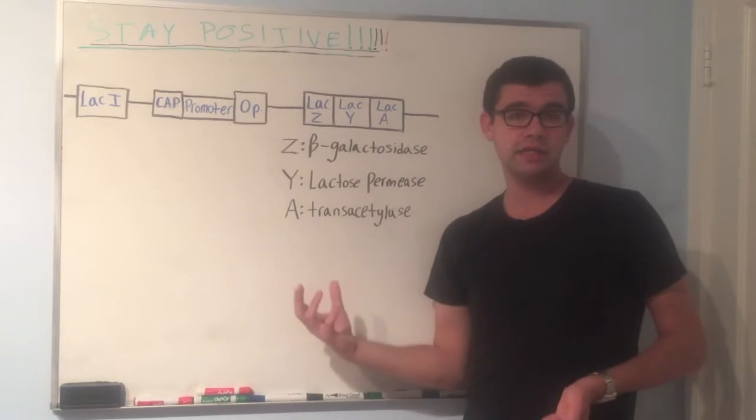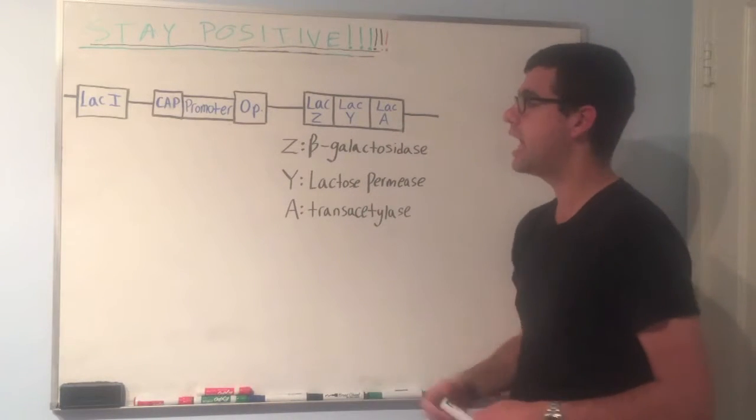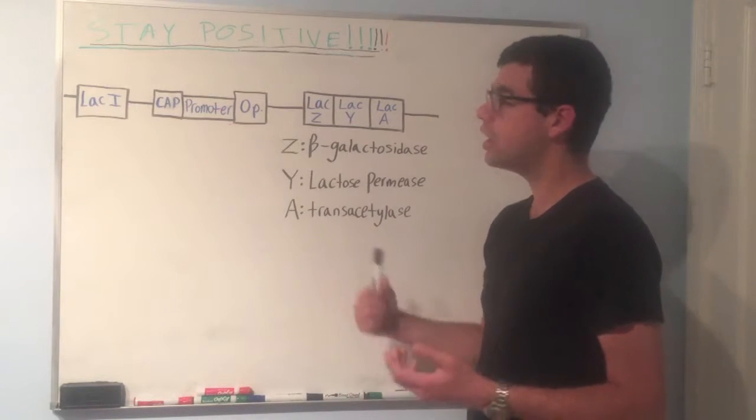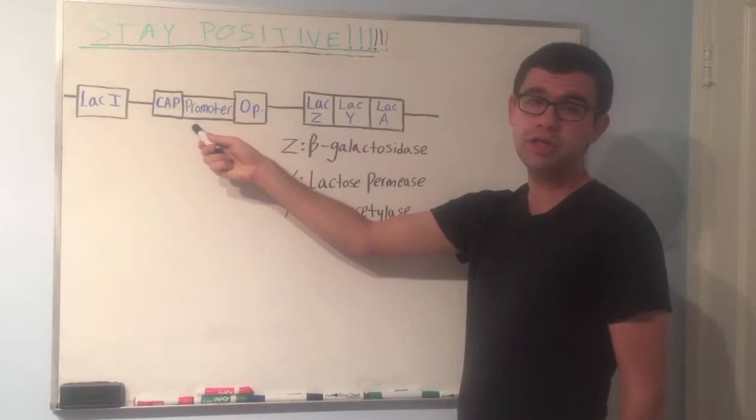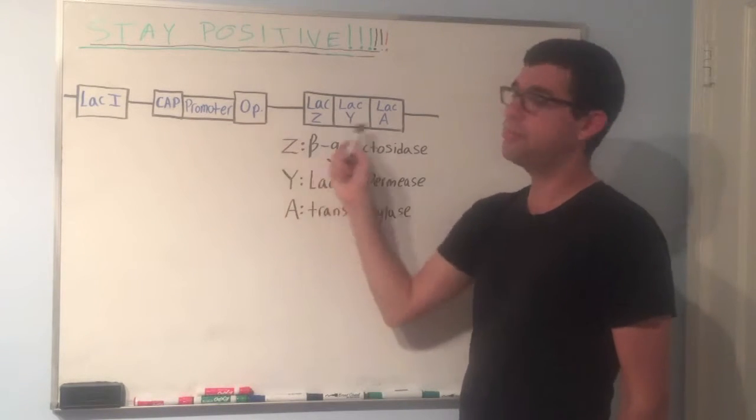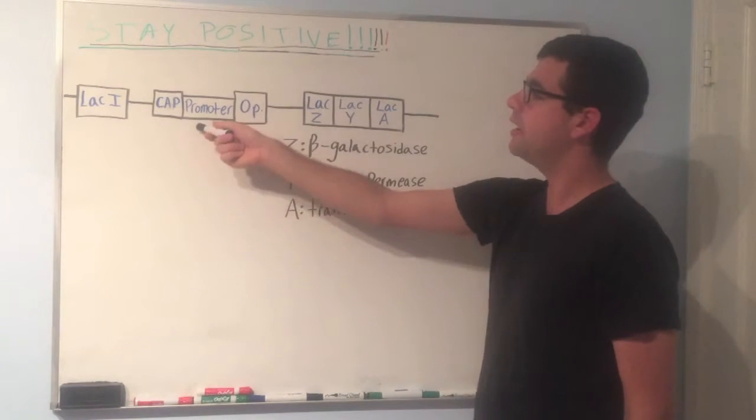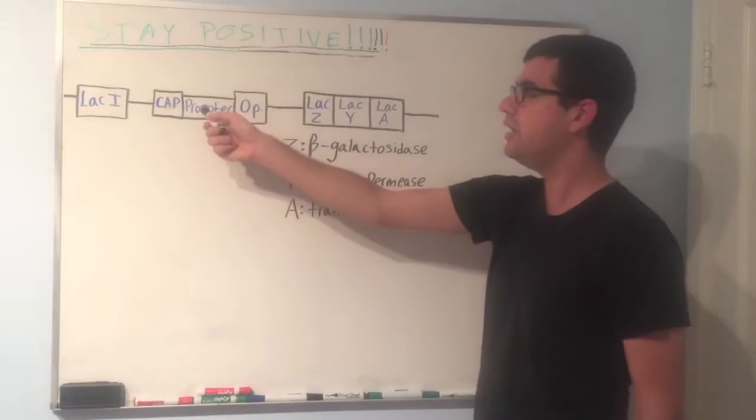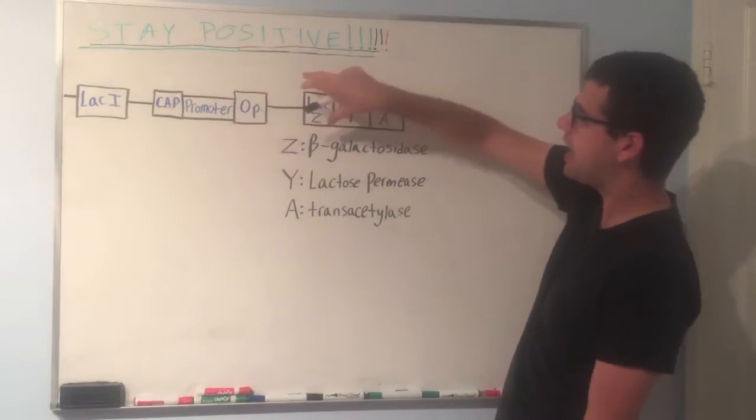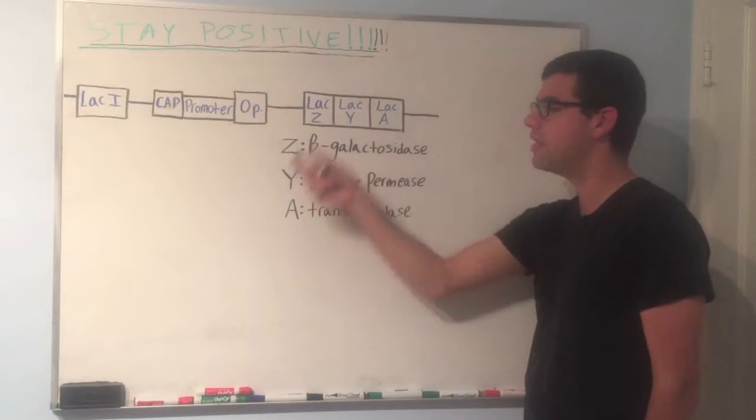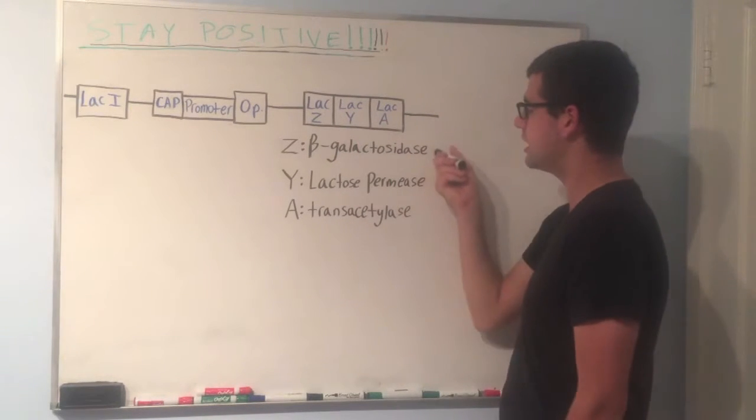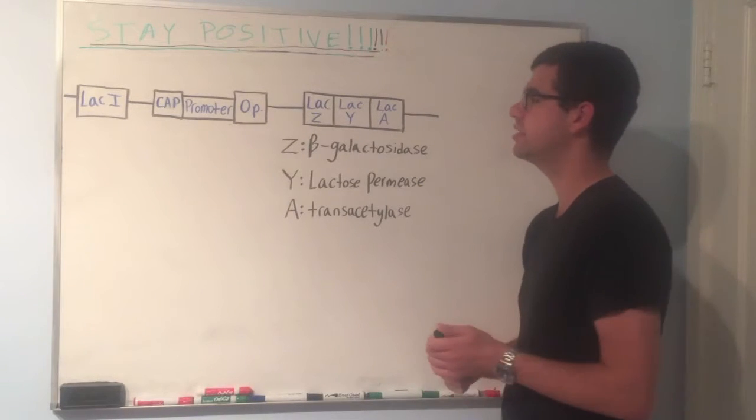And so we want a mechanism to regulate when these are expressed and when they aren't. And so in conditions when lactose concentration is high, what will normally happen is RNA polymerase will bind to the promoter region. This is just a region of DNA upstream of these genes. And RNA polymerase will bind, and you can picture it kind of sliding down the DNA strand and expressing LAC-Z, LAC-Y, and LAC-A so that they can do their job expressing these proteins and then breaking down lactose successfully.